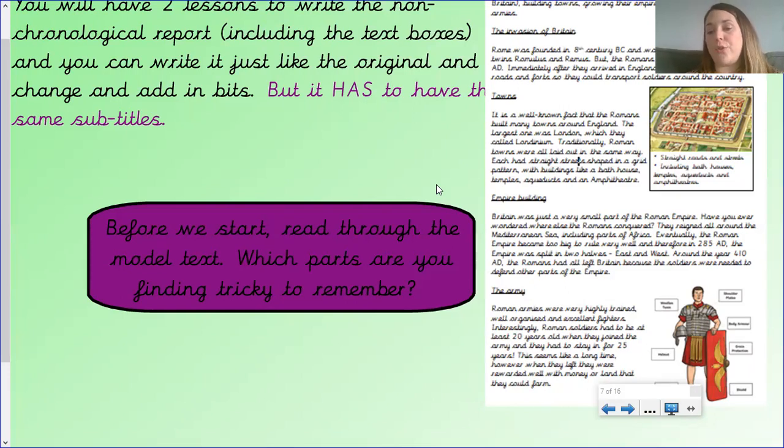Okay, our final section is called the army. Roman armies were very highly trained, well organised, and excellent fighters. Interestingly, Roman soldiers had to be at least 20 years old when they joined the army, and they had to stay in for 25 years. This seems like a long time. However, when they left, they were rewarded well, with money or land that they could farm. Now, we've got another text box here. Here, it's got a picture of a Roman soldier with some labels for parts of his equipment.